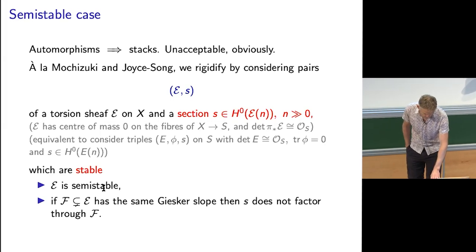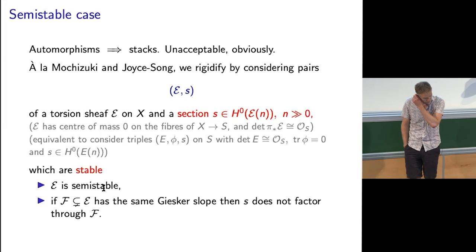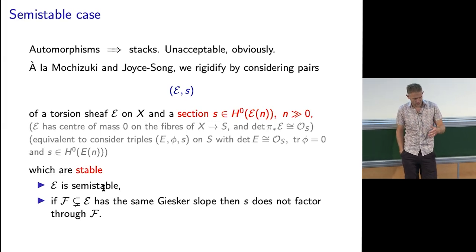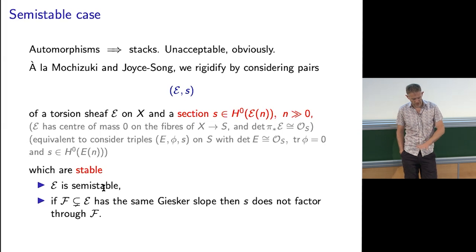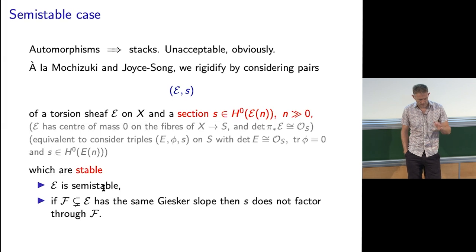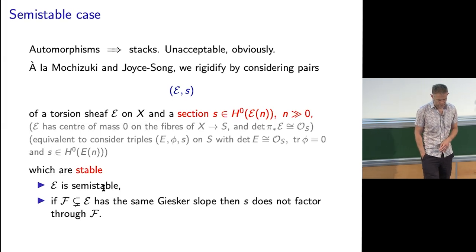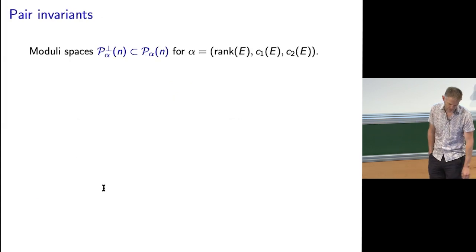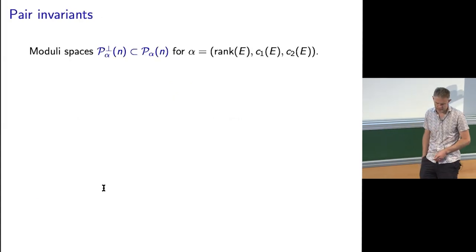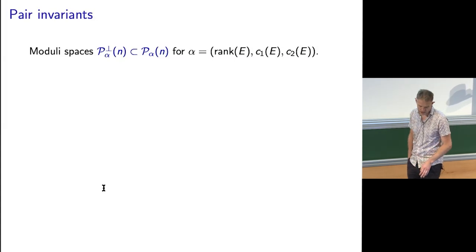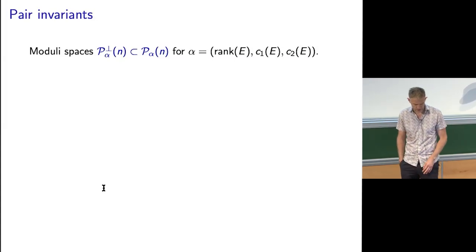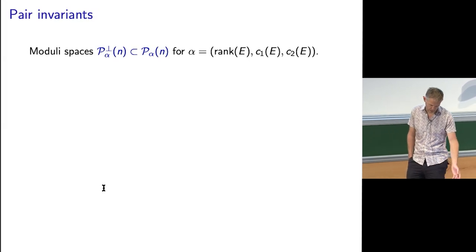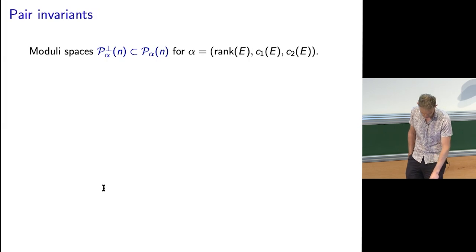This turns out to be the right moduli space to consider. It's as compact as you could expect — it maps to the moduli space of semi-stable sheaves; it's a proper map. Then you can define invariants counting these pairs. We have a moduli space: once you fix some topological data, the moduli space of all pairs — this perp moduli space, the ones with centre of mass zero and fixed determinant.